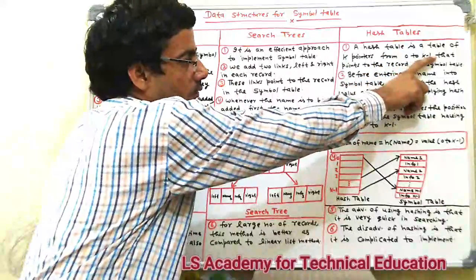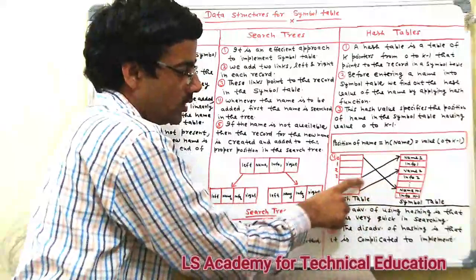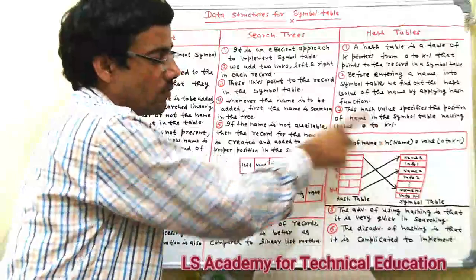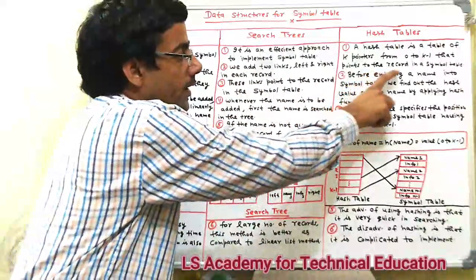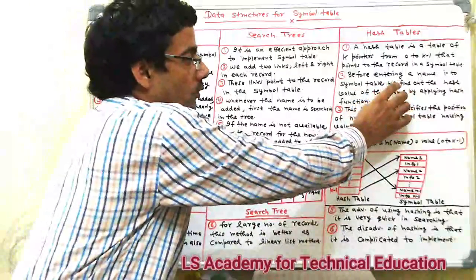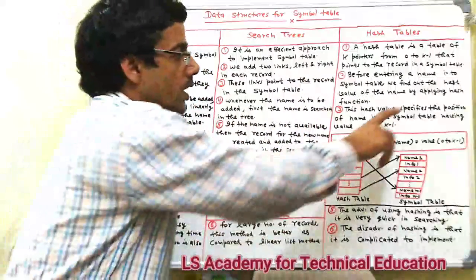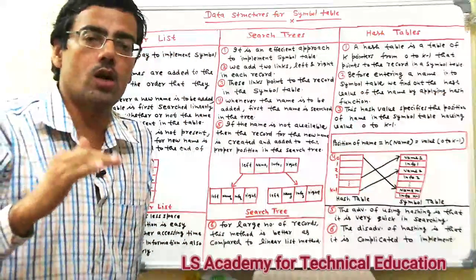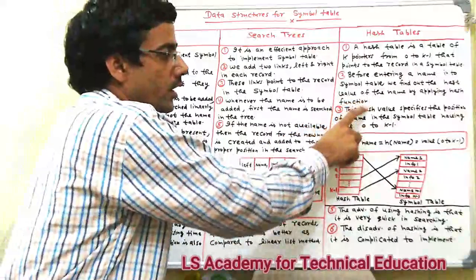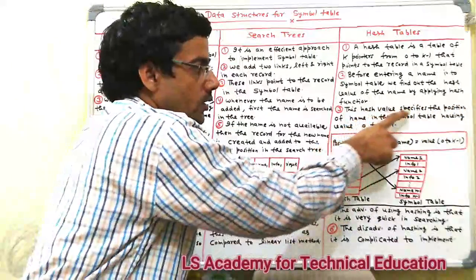The hash table contains positions from 0 to k-1 that point to records in the symbol table. Each position shows one element. Before entering a name into the symbol table, we find out the hash value of the name by applying the hash function. The hash value specifies the position of the name in the symbol table.